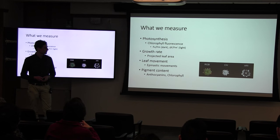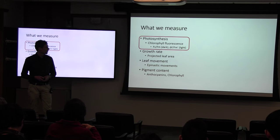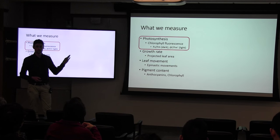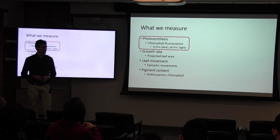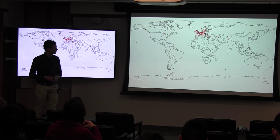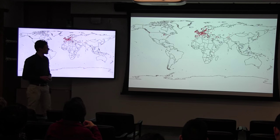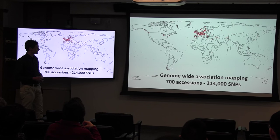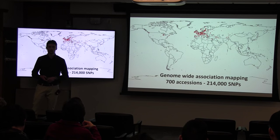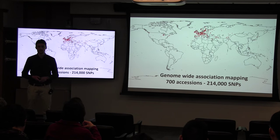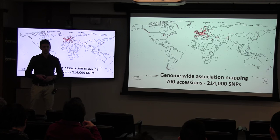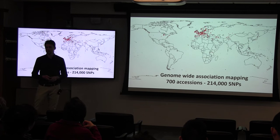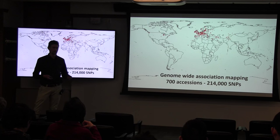Anthocyanin, chlorophyll, things like that. But today I'm going to focus on photosynthesis - not on what was the primary research, but one of the spin-offs. I measured this population of Arabidopsis collected from all over the world. We had 700 accessions genotyped with 214,000 SNPs. It took quite some time even to measure that number because we did a lot of replicates to have good robust data.